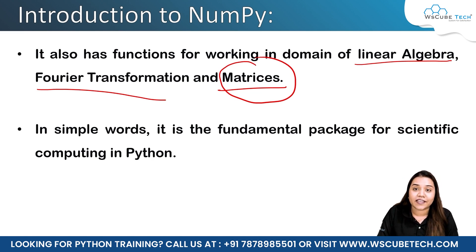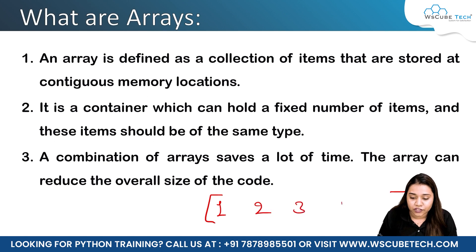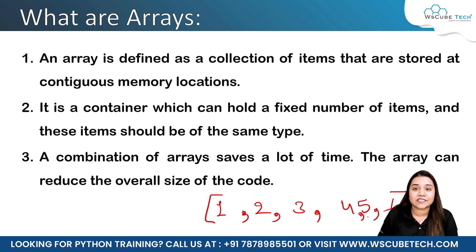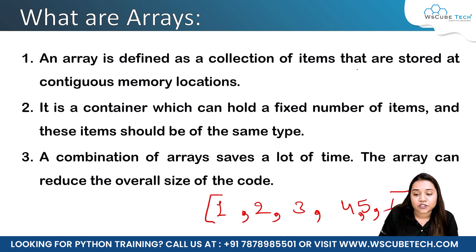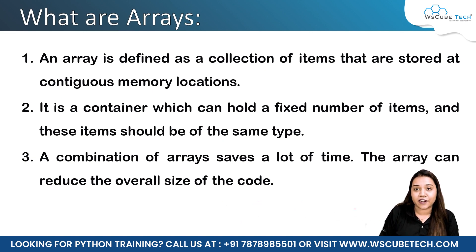You may notice I keep using the term 'arrays' — let's understand what they are. You remember lists in Python: a list is stored inside square brackets with comma-separated values, and can hold different data types. An array, on the other hand, is defined as a collection of items stored at contiguous memory locations.